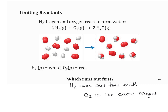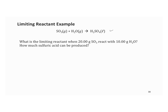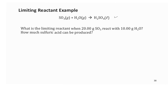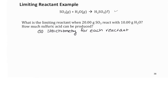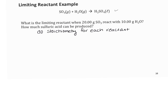Let's do an example to identify the limiting reactant and calculate the theoretical yield. The question asks: what's the limiting reactant when 20 grams of SO3 reacts with 10 grams of water? How much sulfuric acid will be produced? You need to do stoichiometry for each reactant. We have SO3 and H2O, and the one that produces the least amount of sulfuric acid is the limiting reagent. You have to do both — you can't just do one.